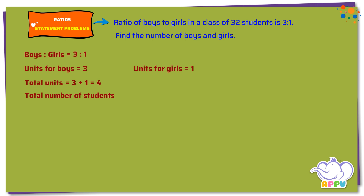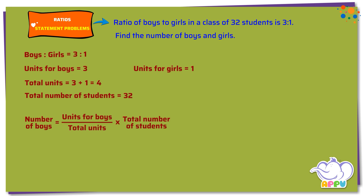Total number of students equals 32. Number of boys equals units for boys divided by total units times total number of students, equals 3 by 4 times 32. We can simplify this: 4 divides 4 once and 4 divides 32 eight times. This equals 3 times 8 equals 24 boys.